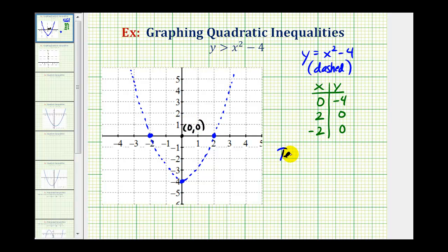So now we'll test the original inequality using the point zero, zero, meaning we'll substitute zero for x and zero for y and see if it satisfies the inequality. So we would have zero is greater than zero squared minus four. So we have zero greater than negative four. Well, zero is greater than negative four because zero is to the right of negative four on the number line. Therefore, this is true.